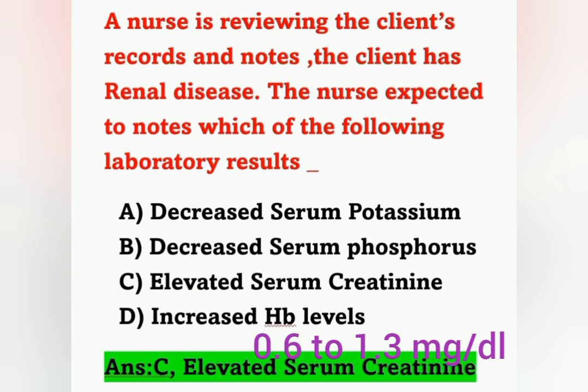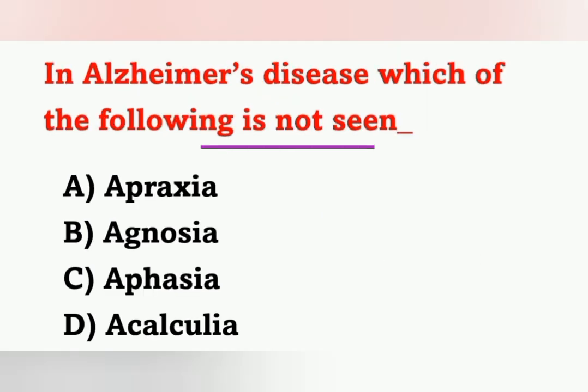In renal disease, the creatinine value will be elevated. Normal serum creatinine is 0.6 to 1.3 milligrams per deciliter. Option C, elevated serum creatinine, is the correct answer.